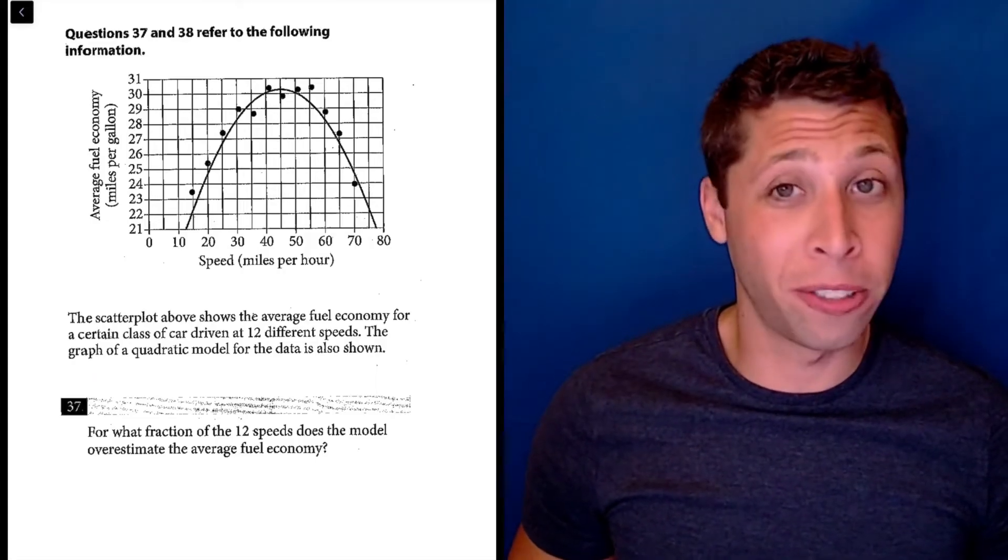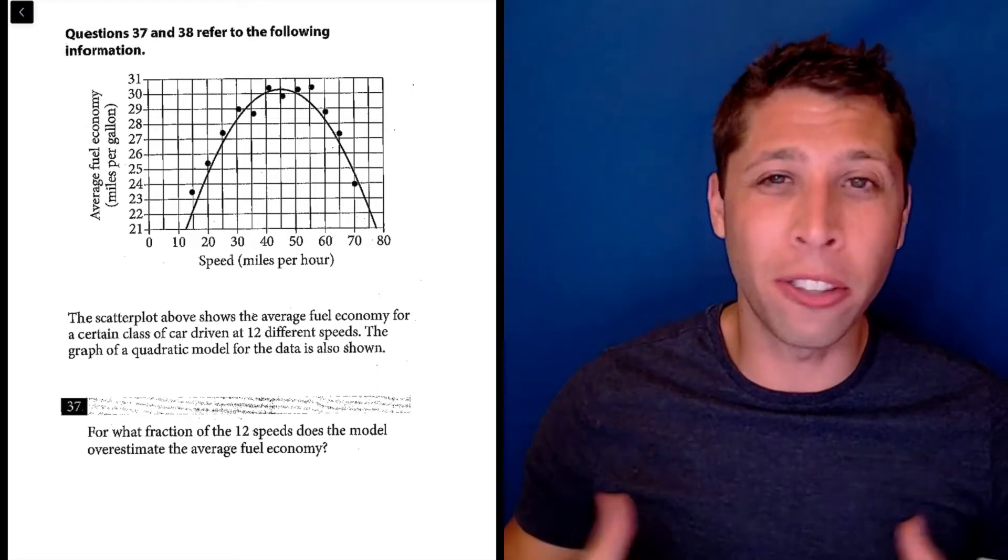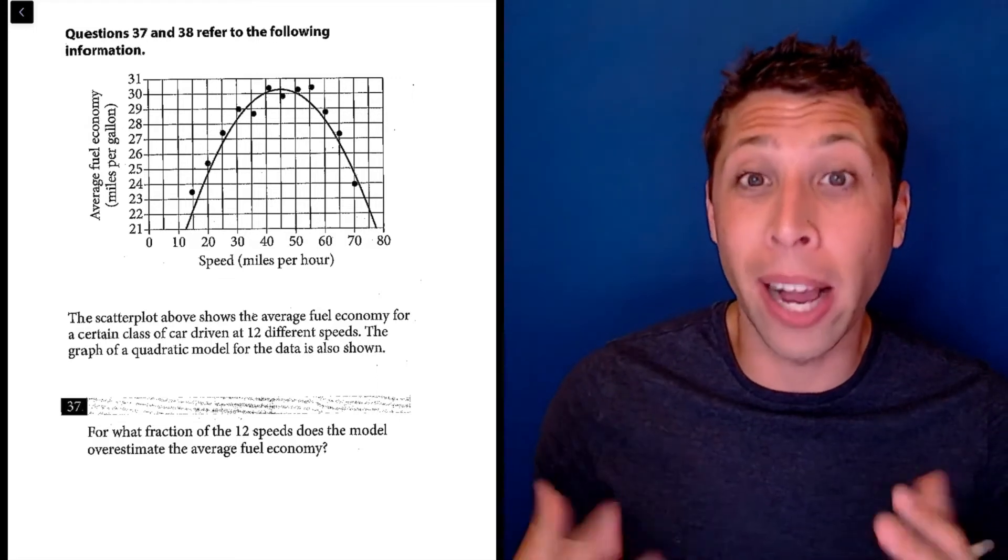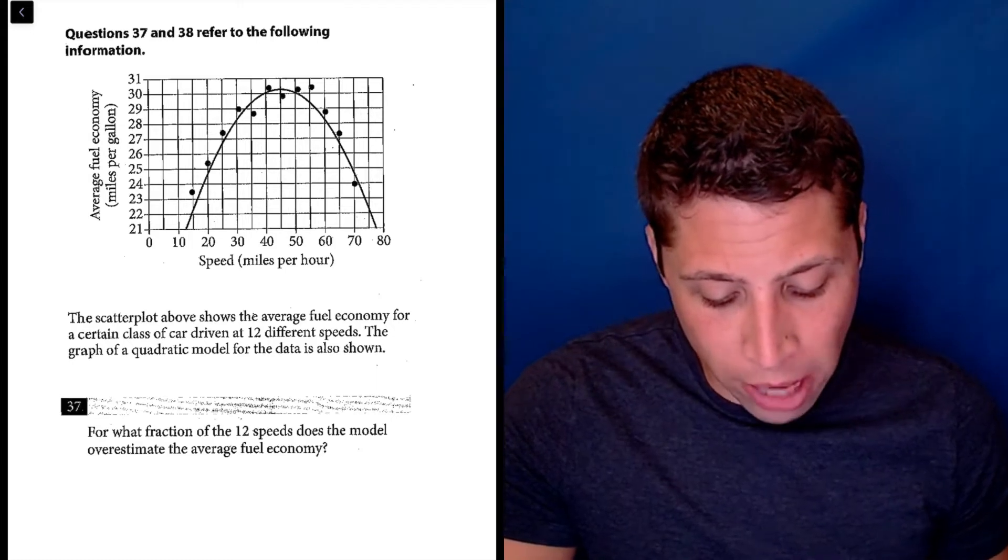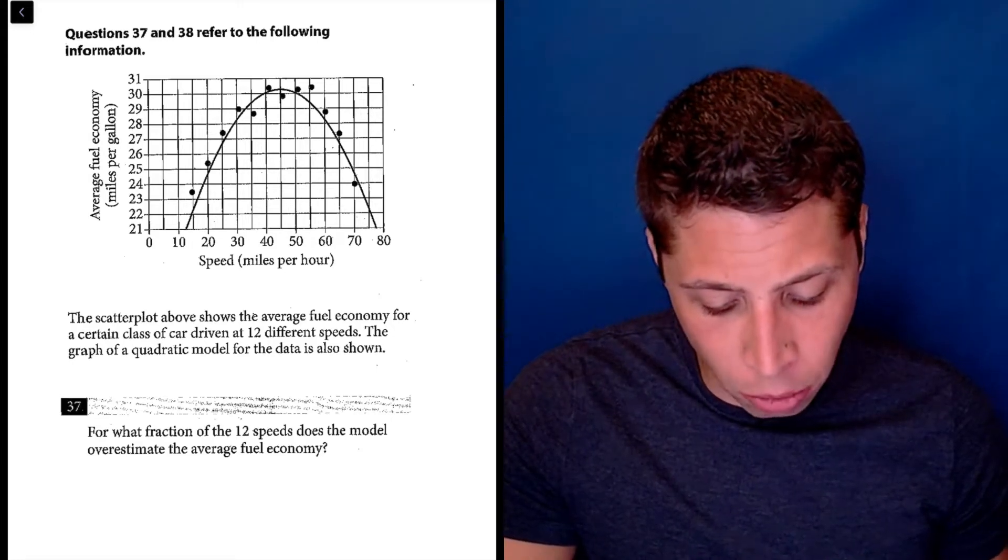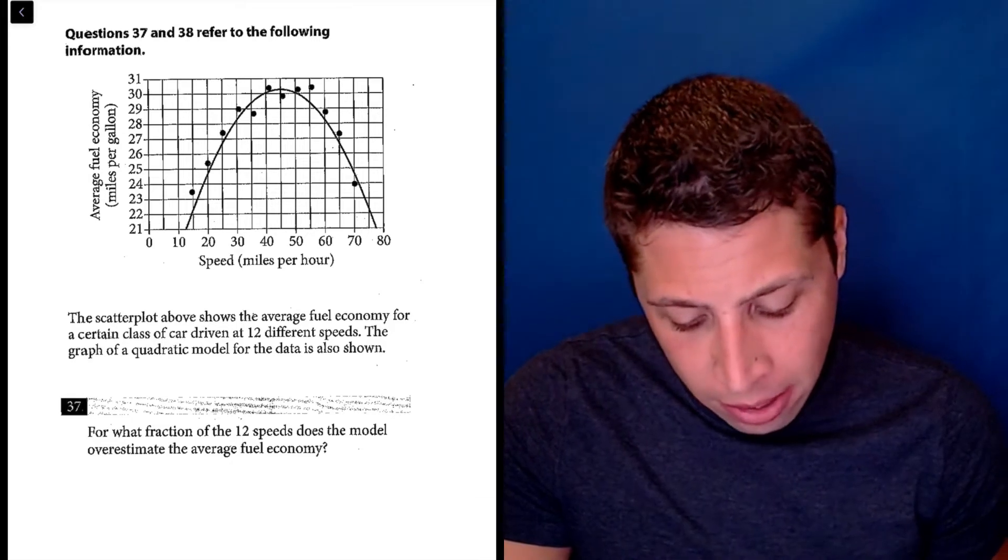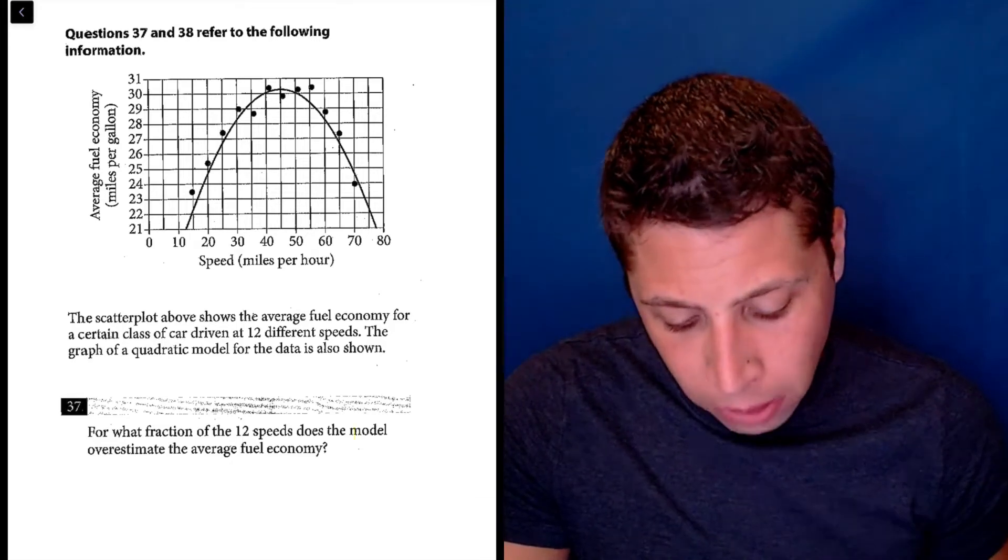This is actually a really easy question for the last part of the test. We just need to understand the vocab and really memorize what a scatterplot is to understand what they're asking for. So what fraction of the 12 speeds does the model overestimate the average fuel economy? So the key is, we've got two words here that matter: model and overestimate.